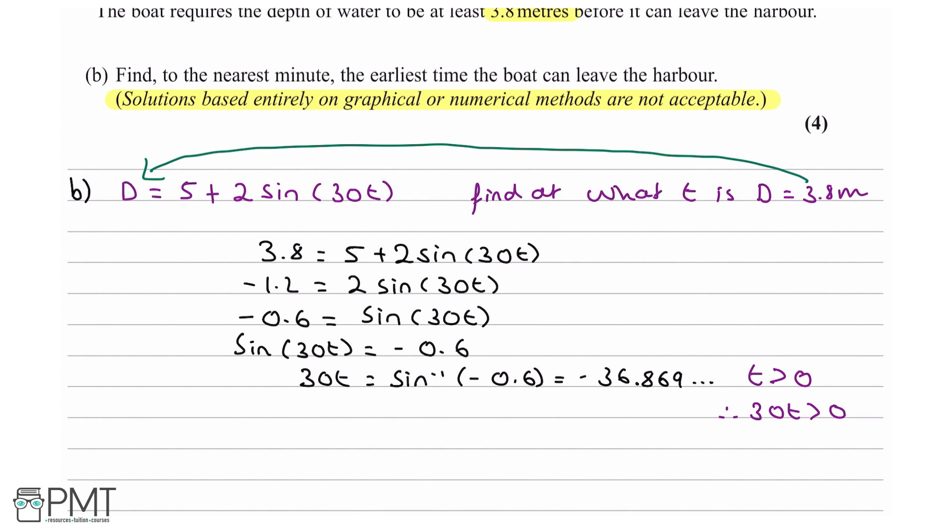And we know that the period of a sine wave, the number of degrees between this point and this point is 360 degrees. So what we need to do is use this information to add 360 degrees to our time for 30t. So we're going to say 30t equals minus 36.86 plus 360, which equals 323.13.